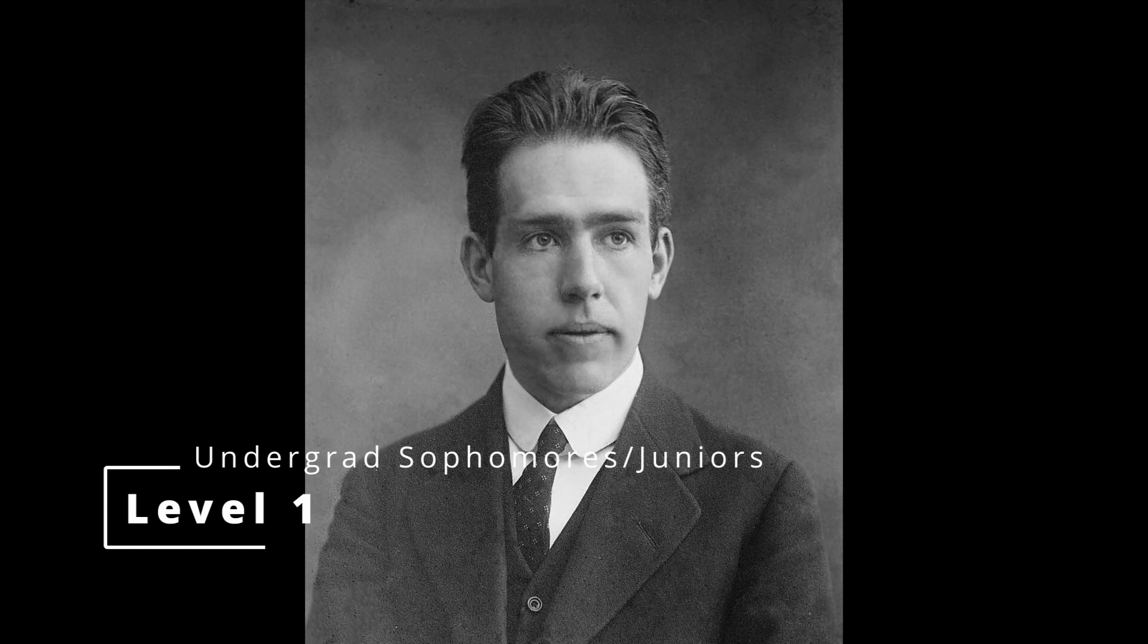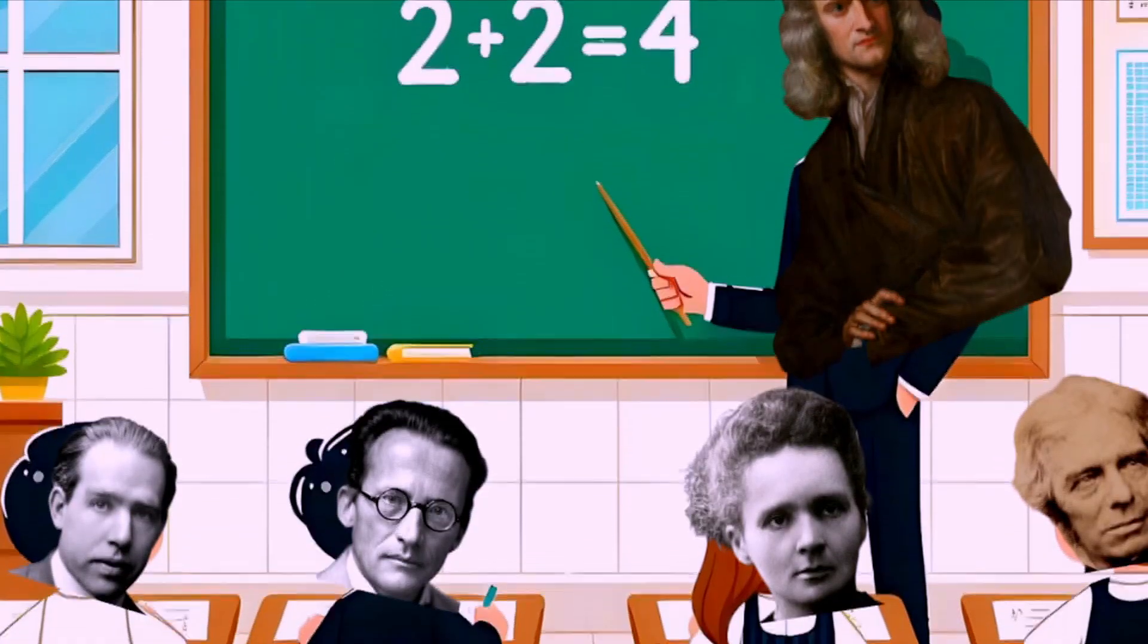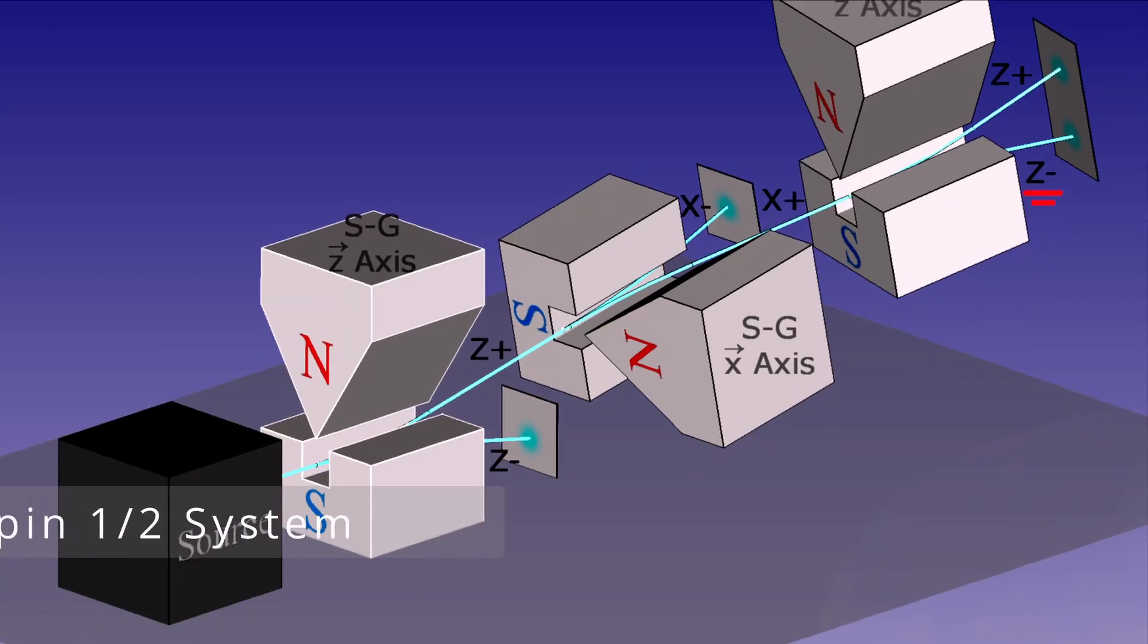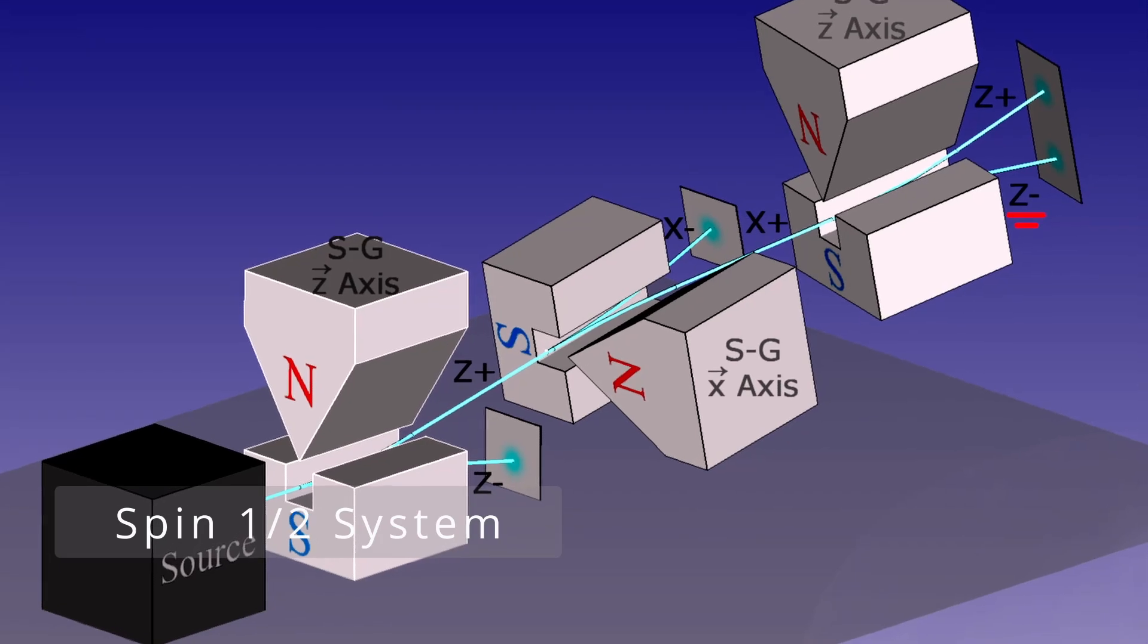Level one. The aim of level one quantum mechanics is to familiarize the student with the formalism of quantum mechanics. How is it different from classical physics? What are some of the challenges that force us to create quantum mechanics? So this is the standard curriculum of quantum mechanics one. You would be taught about Stern-Gerlach experiment, so spin half.